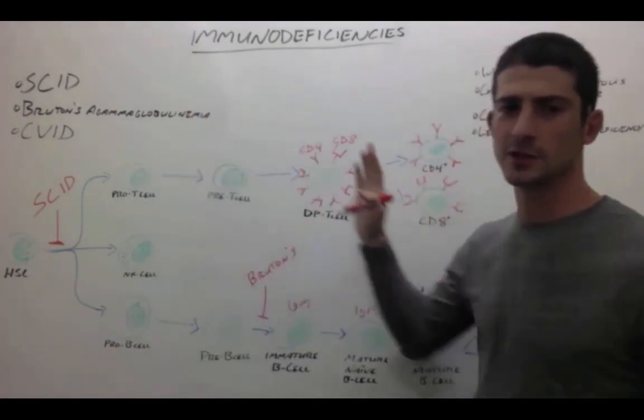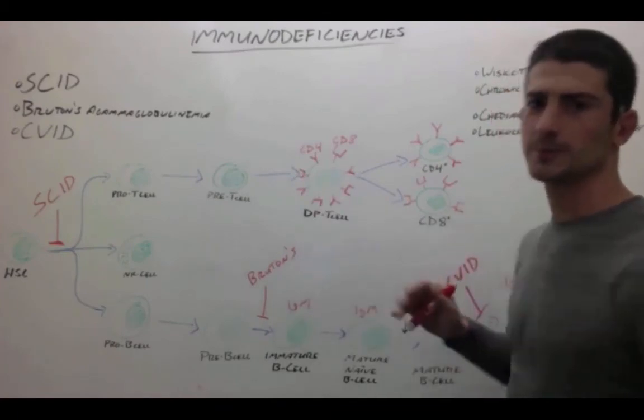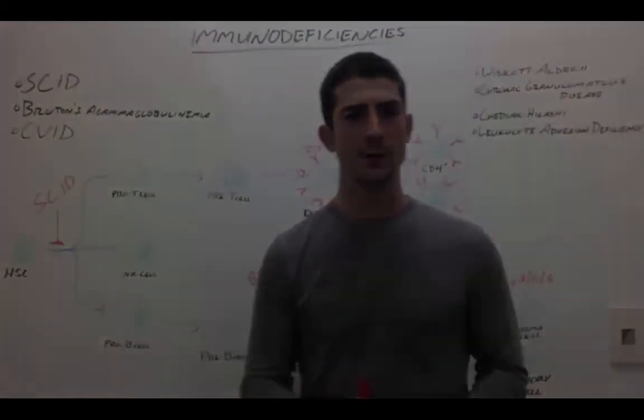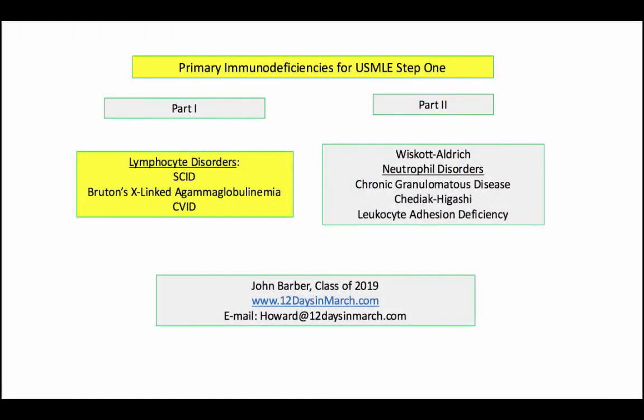Pretty straightforward once you understand where in the lymphocyte lineage these three diseases are causing the problems. That concludes this discussion of the lymphocyte predominant immunodeficiencies. In this video, we reviewed the cellular defects and their infectious complications — fairly straightforward without much memorization. Please join us in the next video presentation as we get into the more colorful disorders of phagocytic function. If you have any questions, please contact us at 12 Days in March. Thank you.